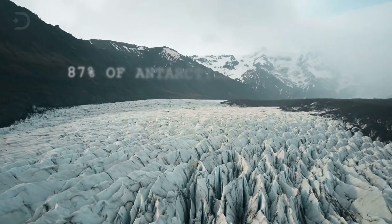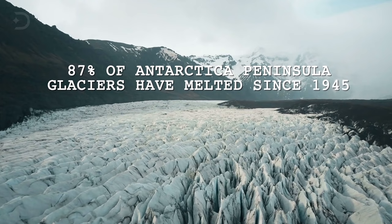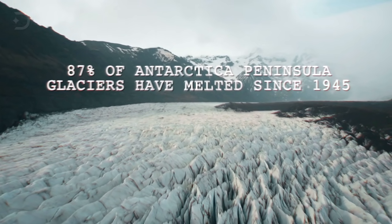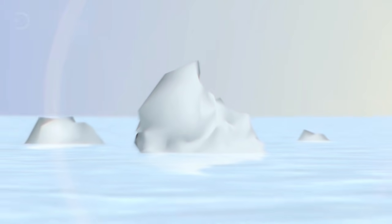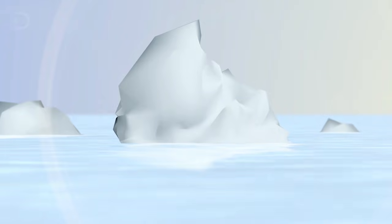Eighty-seven percent of Antarctica Peninsula glaciers have melted since 1945. Now the region's sea ice is declining by 13 percent each decade. Scientific predictions that foresaw an ice-free Arctic Ocean during the summer between 2040 and 2050 may come to pass even sooner than we thought.